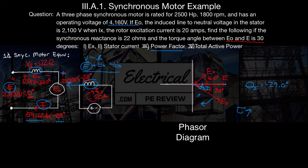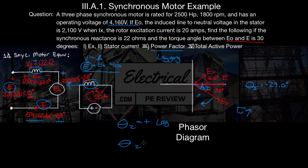Regarding power factor: I is lagging E, so the power factor is lagging. We can also tell this because the only impedance on this side of the circuit is a positive J value — when the impedance angle theta Z is positive, we get a lagging (inductive) circuit; if negative, we'd have a leading (capacitive) circuit. Always draw your diagrams, and after that it becomes a very basic circuit analysis problem.